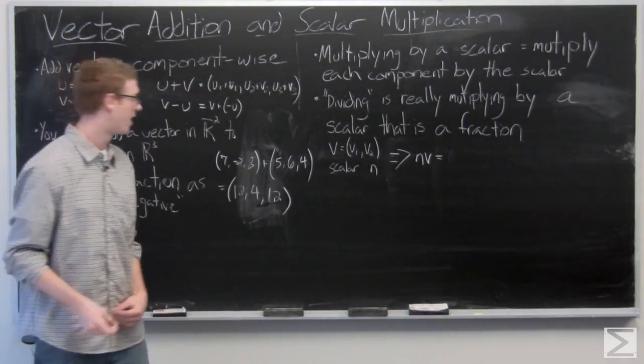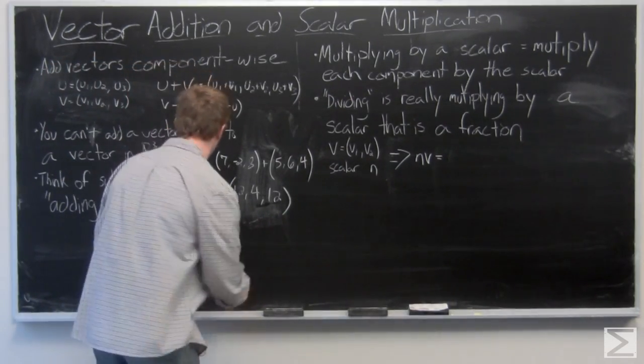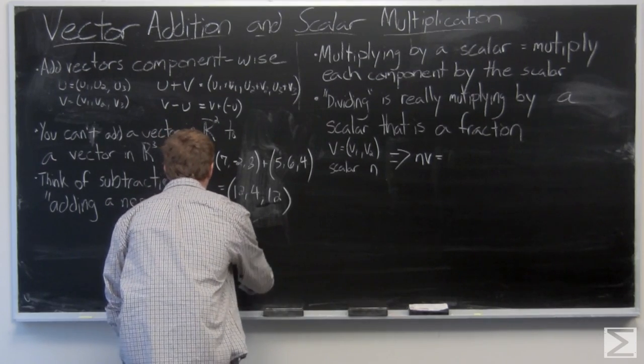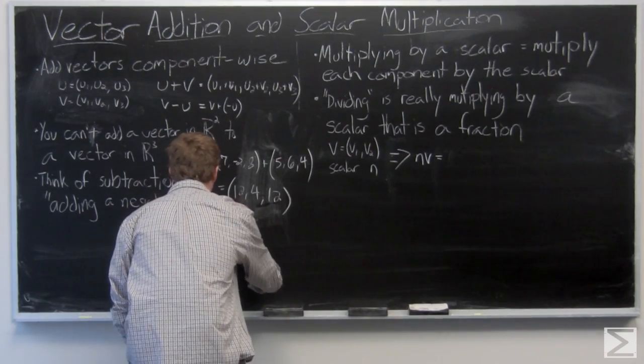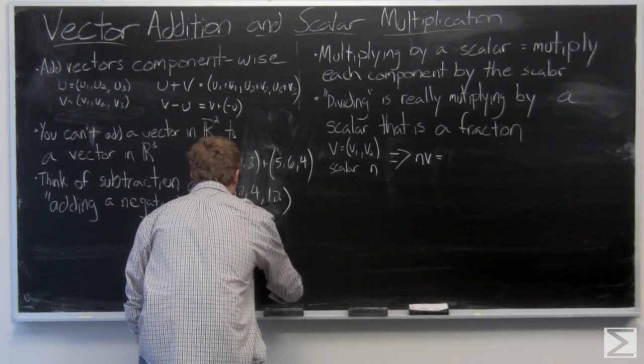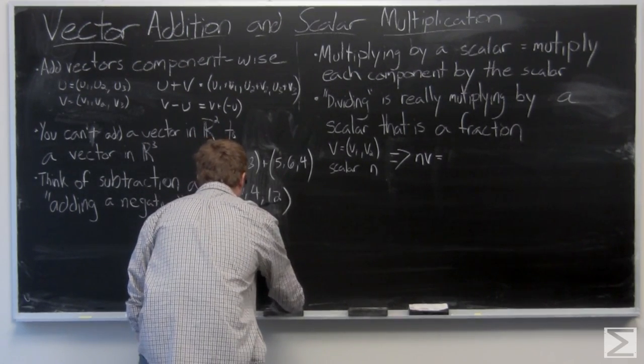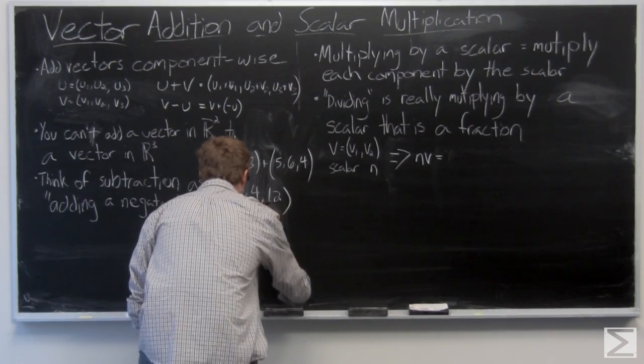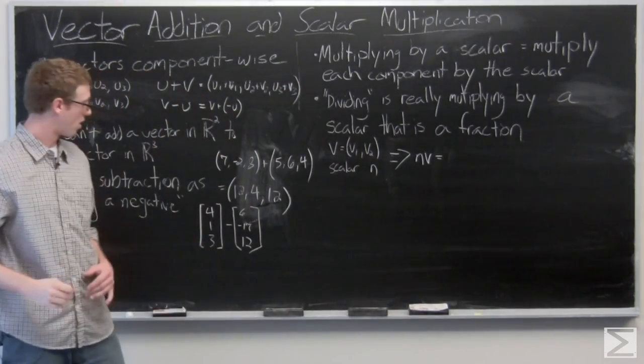Let's take a look at an example of subtraction. So we have 4, 1, 3, minus 6, negative 17, 12.